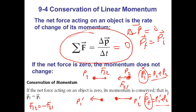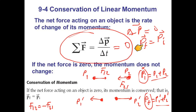Now, what about the conservation law for momentum? If there is no net force acting on an object, the object is in equilibrium. Since force equals delta P divided by delta T, if there is no net force this ratio equals zero, meaning delta P equals zero. If delta P equals zero, the final momentum must equal the initial momentum — the momentum is conserved.